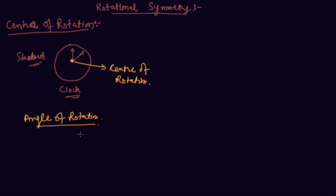The angle of rotation is basically, let's say when the minute hand was at 0, and when it moves to 5, 10, 15, so the total angle it covered is 90 degrees. This is called the angle of rotation.